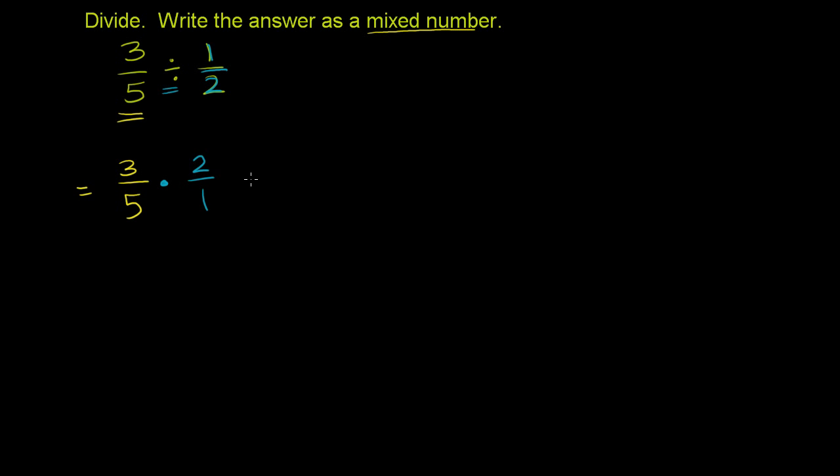And we just do this as a straightforward multiplication problem now. 3 times 2 is 6, so our new numerator is 6. 5 times 1 is 5. So 3 fifths divided by 1 half as an improper fraction is 6 fifths.